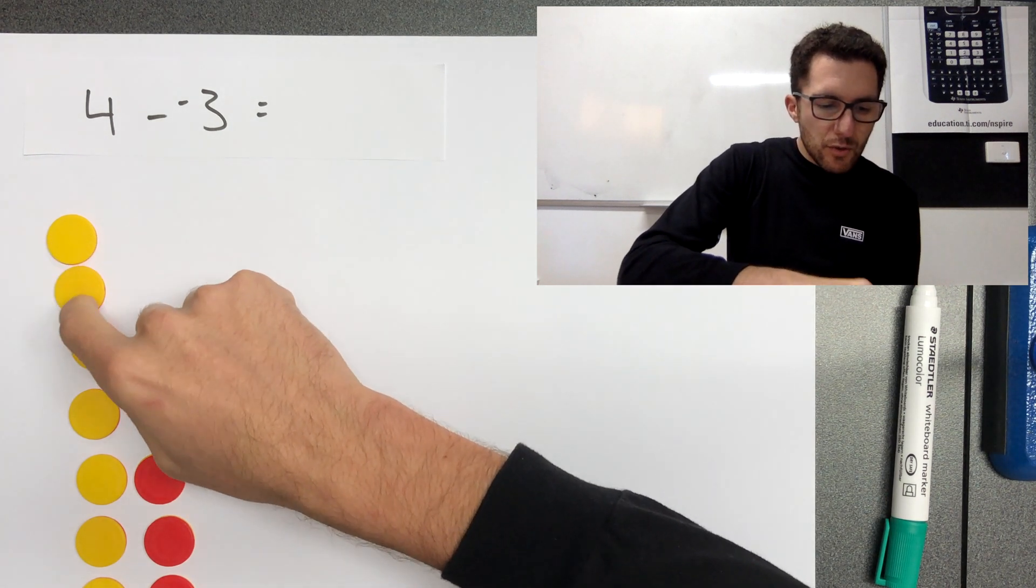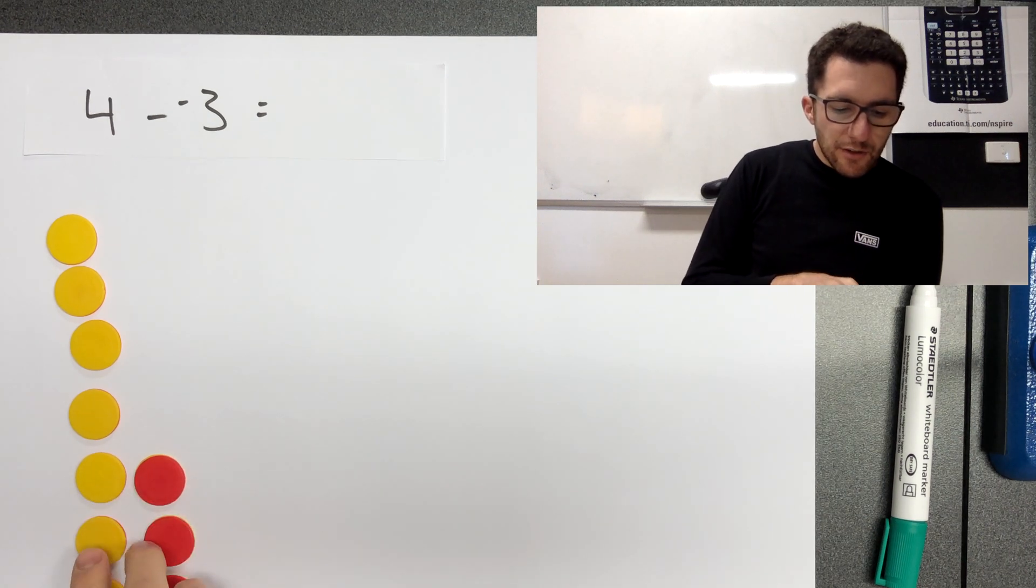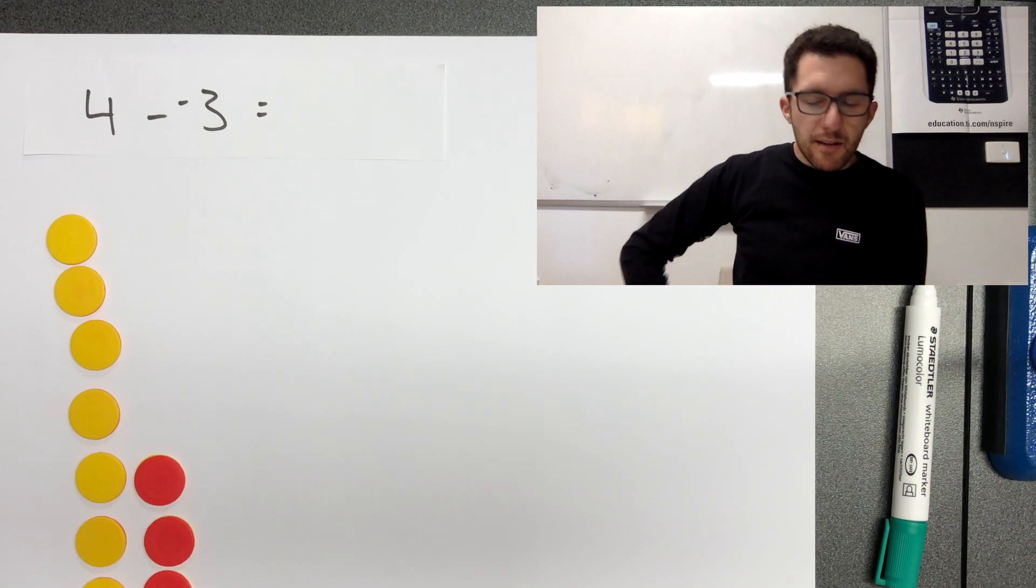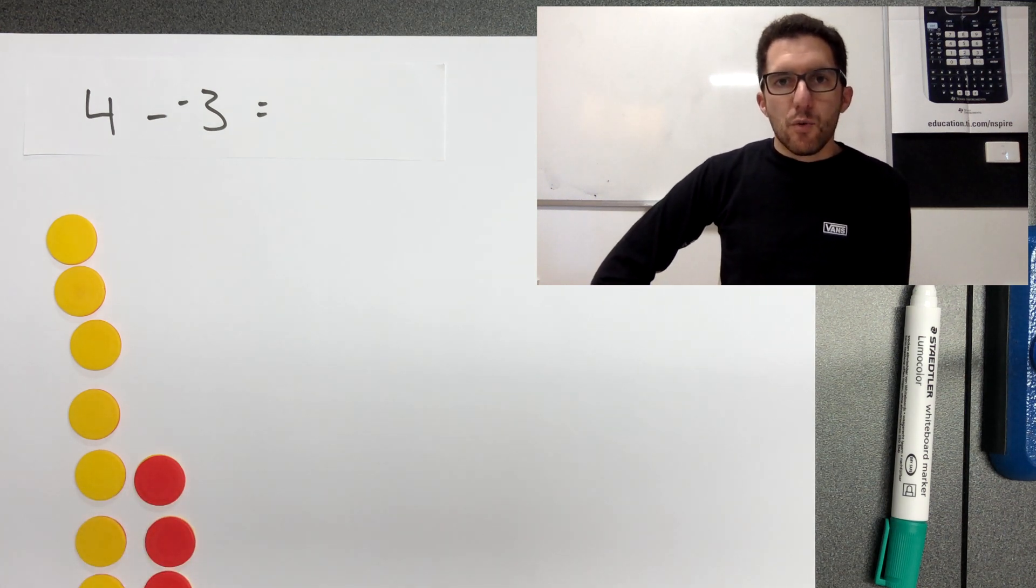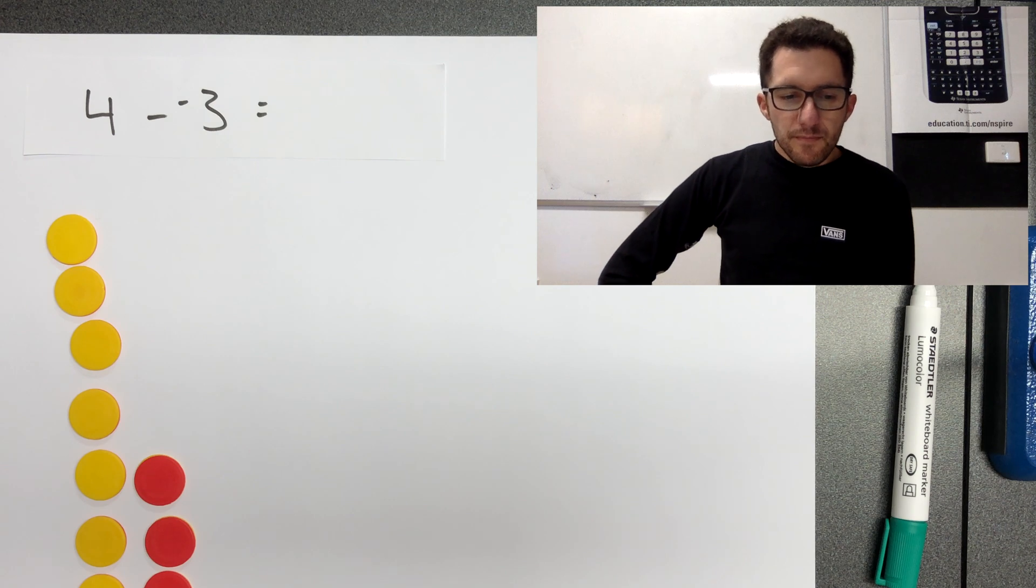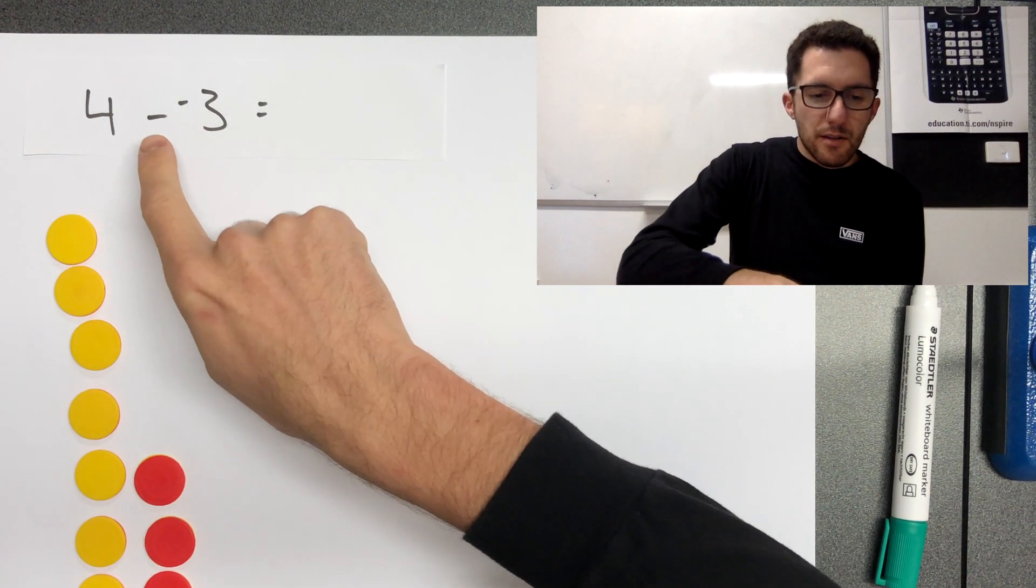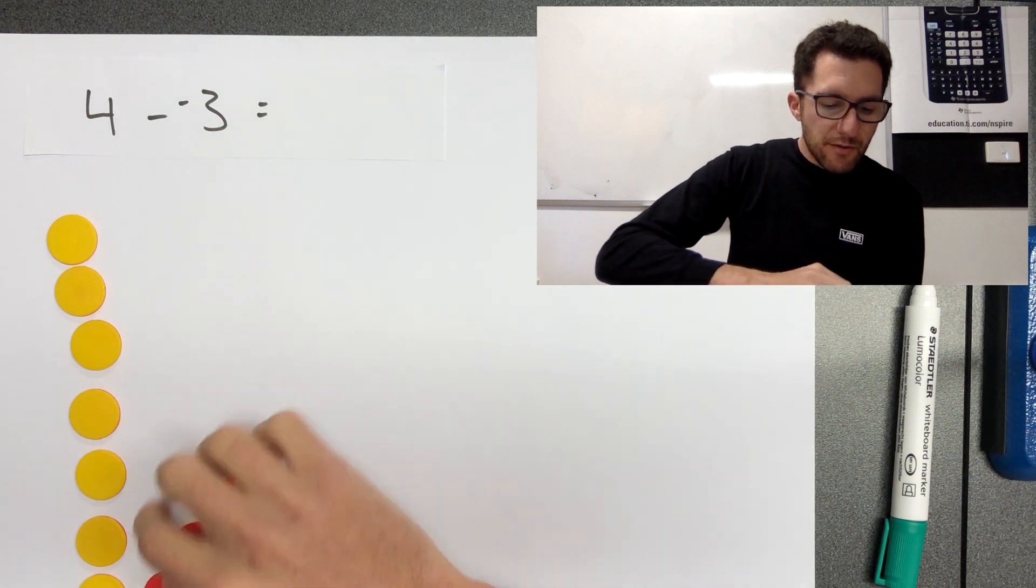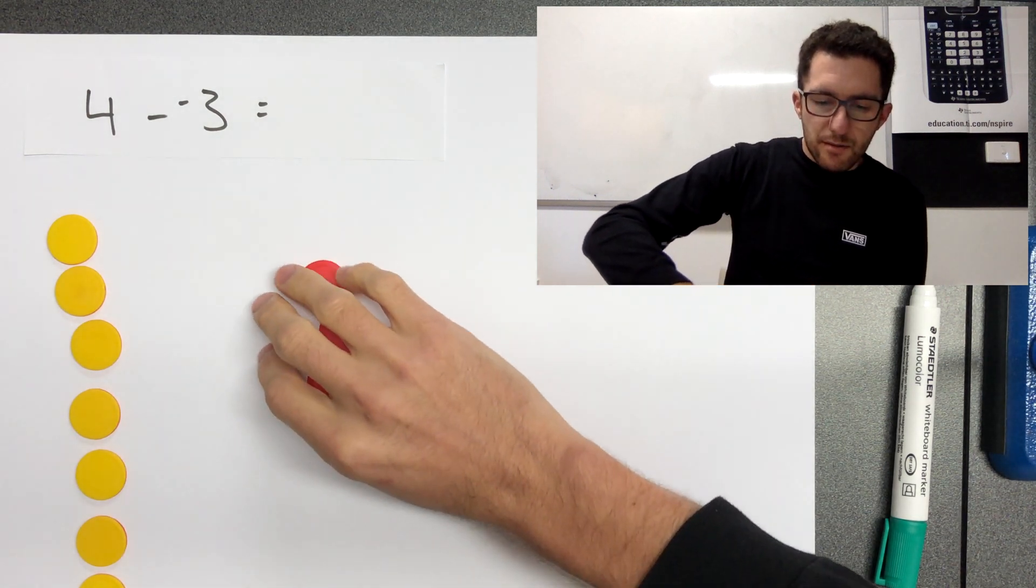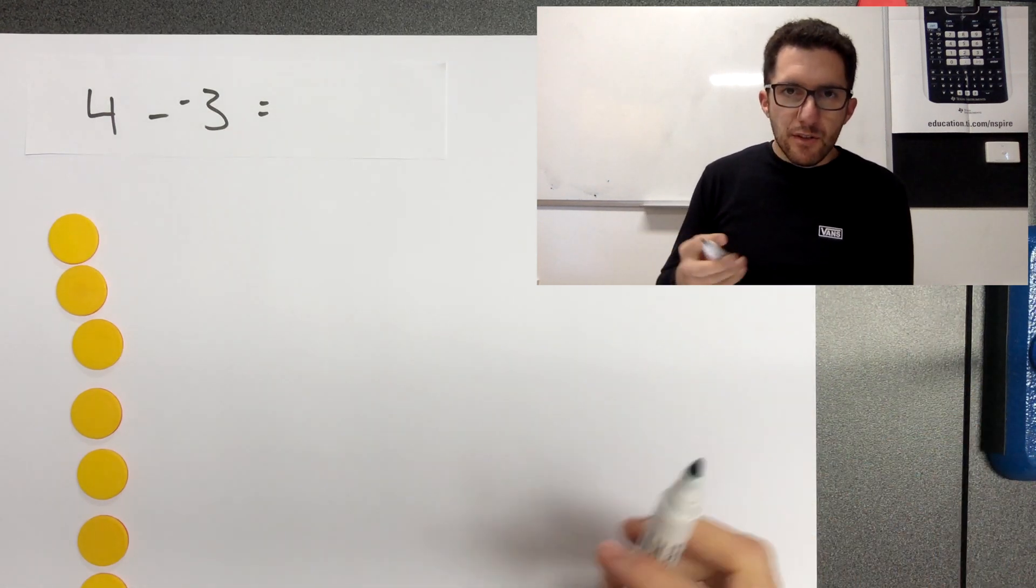So we've got one, two, three, four yellow tokens at the top. And then each of these yellow tokens down here is canceled out by a red. So these pairs here are all worth zero. But now we have some negative tokens to subtract. So four take away three negatives. So now we're going to get rid of three negatives.